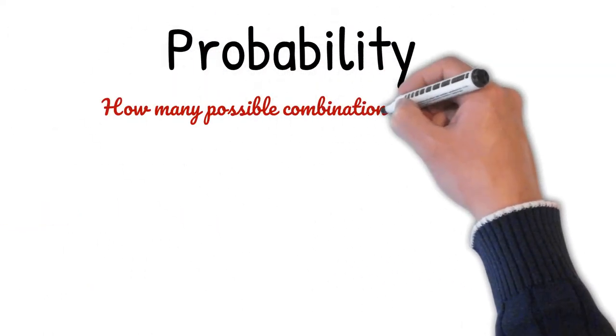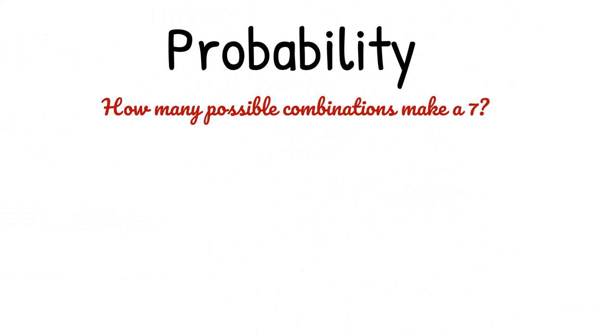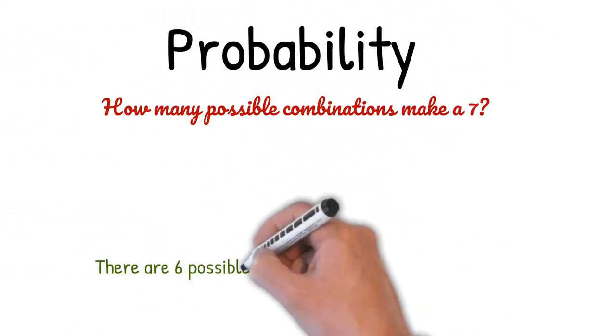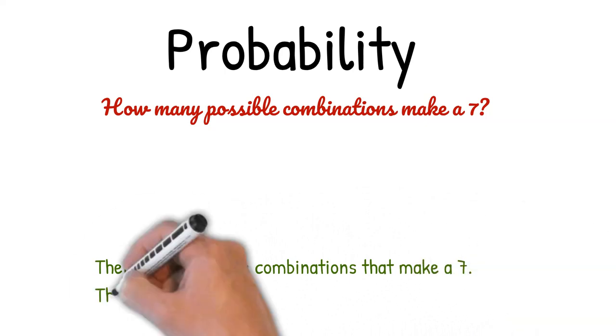How many possible combinations make a seven? There are six possible combinations that make a seven.